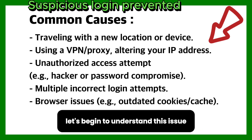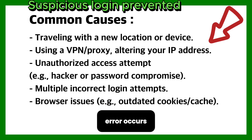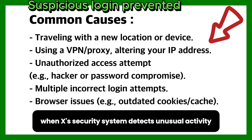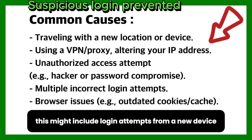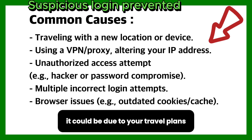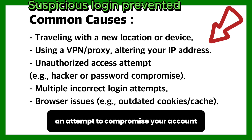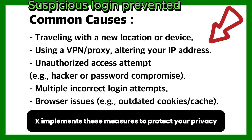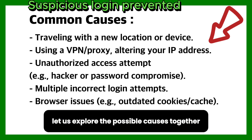The suspicious login prevented error occurs when X's security system detects unusual activity. This might include login attempts from a new device, a different location, or multiple failed tries in a short period. It could be due to your travel plans, the use of a VPN, or in rare cases an attempt to compromise your account. X implements these measures to protect your privacy, but it may temporarily restrict access.